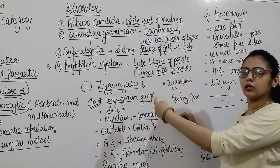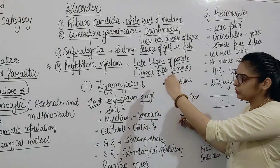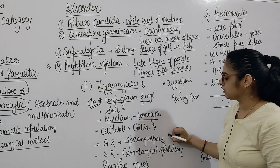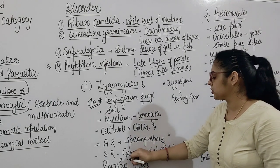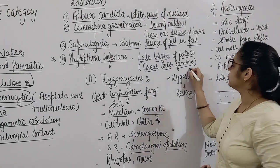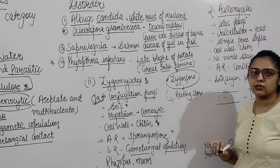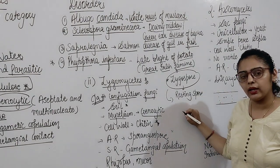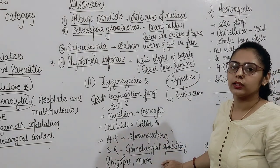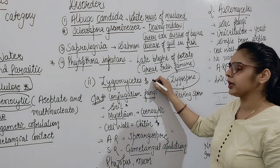As an exception among Phycomycetes — where Oomycetes has a cellulose cell wall — the Zygomycetes cell wall is made up of chitin. Asexual reproduction is by sporangiospores. Sexual reproduction is by gametangial copulation. Examples include Rhizopus and Mucor, which are also known as resting spores. These belong to Phycomycetes, category Zygomycetes.